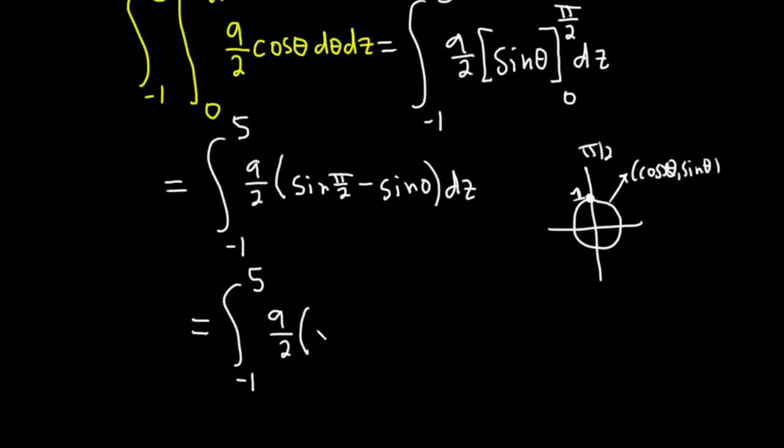So this is going to be 1 minus, and the y coordinate at 0 is 0. Sine of 0 is 0. Dz.